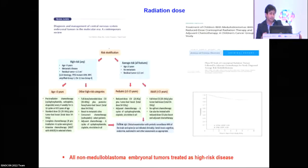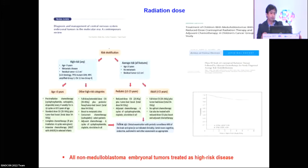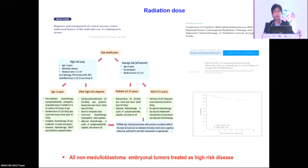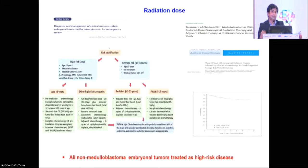For standard-risk pediatric disease, Packer's group showed we can use a reduced dose of CSI — 23 to 24 Gy — with total dose to the tumor bed still 54 to 55 Gy, with addition of adjuvant chemotherapy. For adults with average-risk disease, compliance to chemotherapy is poorer and tolerance to higher CSI dose differs. In our center we practice 35 Gy as standard CSI for adults and often avoid adjuvant chemotherapy, though recent WNT data with cyclophosphamide is influencing some practice modifications.